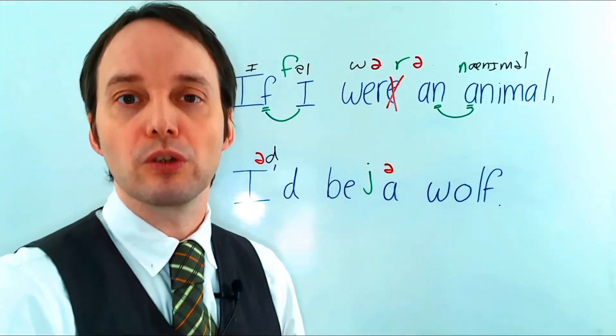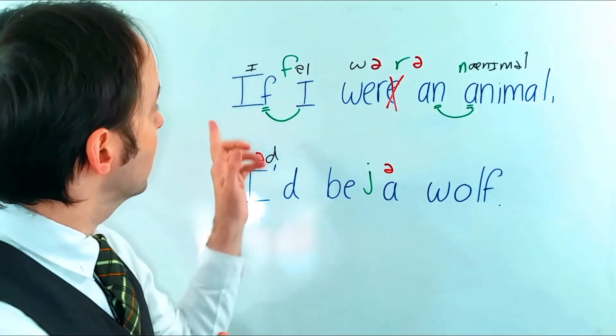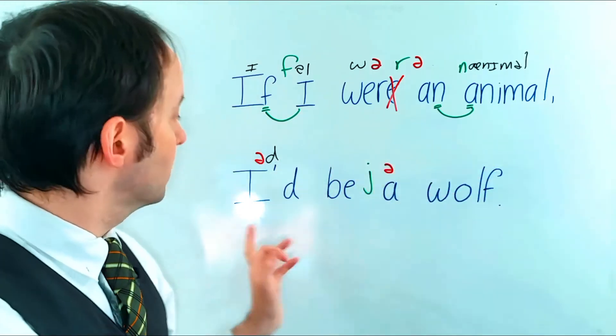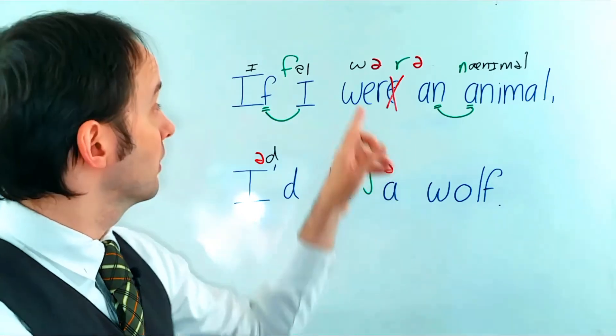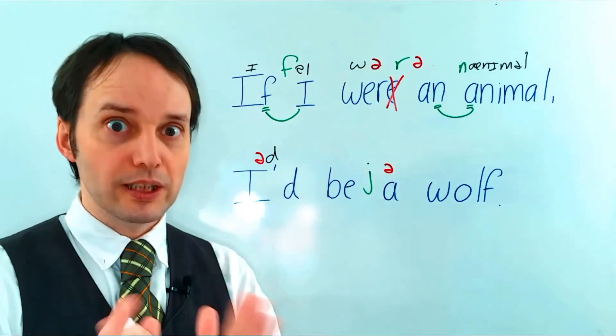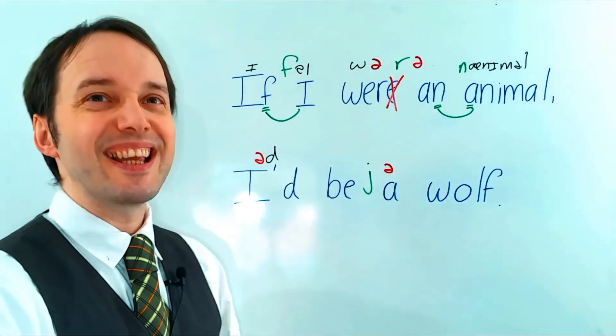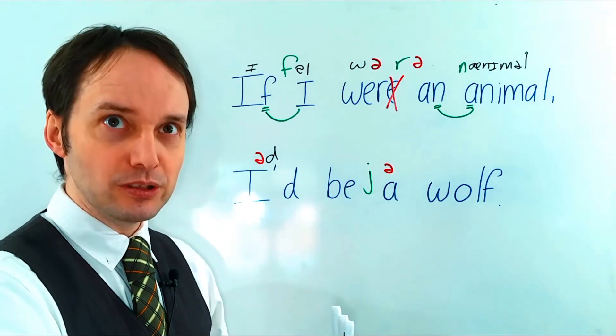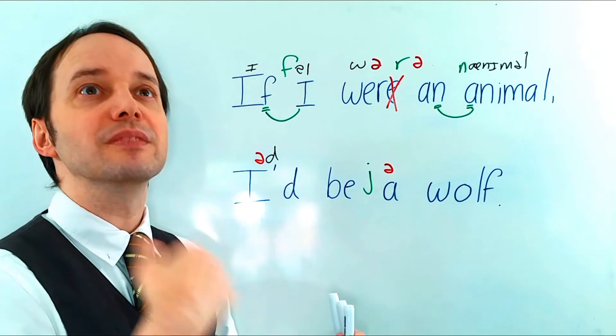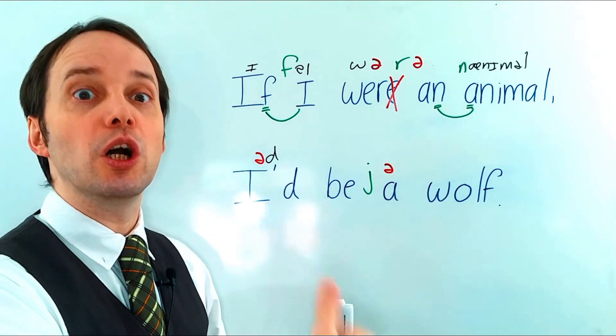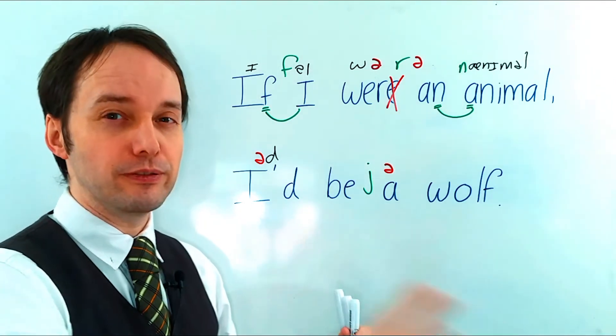Okay, so let's put both clauses together then. Okay, so if I were an animal, I'd be a wolf. Okay, we've got connected speech. Very good. We've got our weak forms. Okay, very good. So, if I were an animal, I'd be a wolf. Okay, listen one more. If I were an animal, I'd be a wolf.